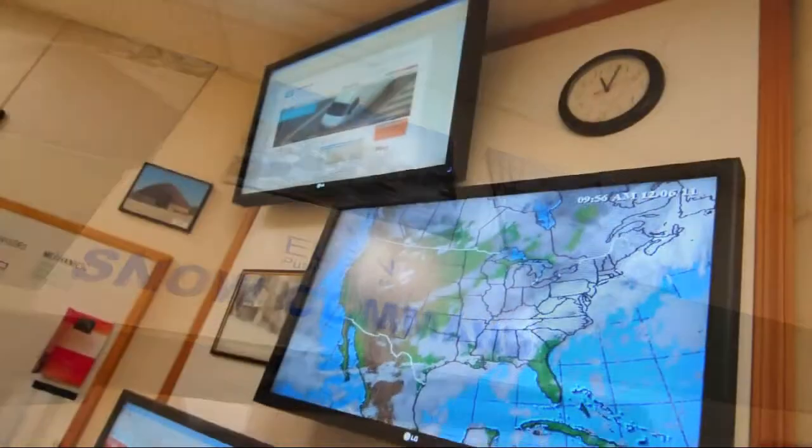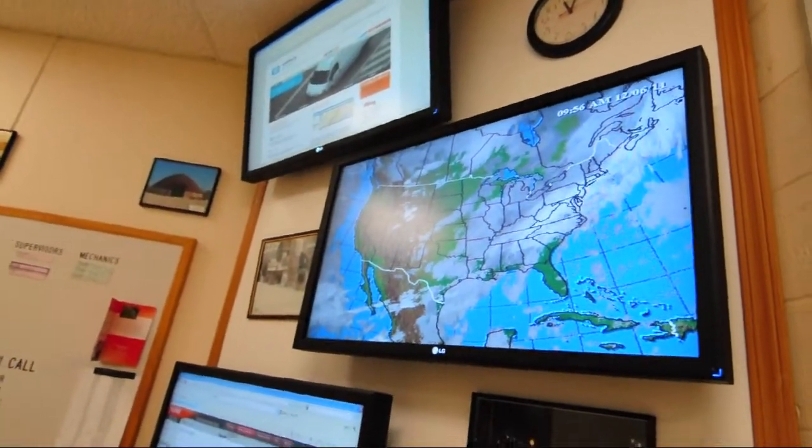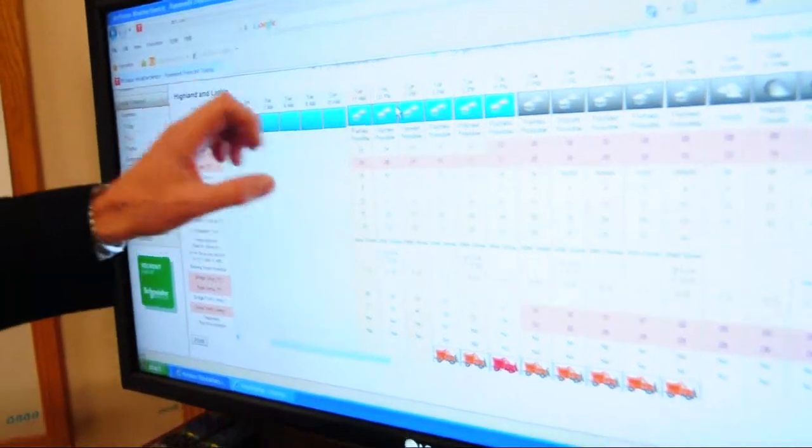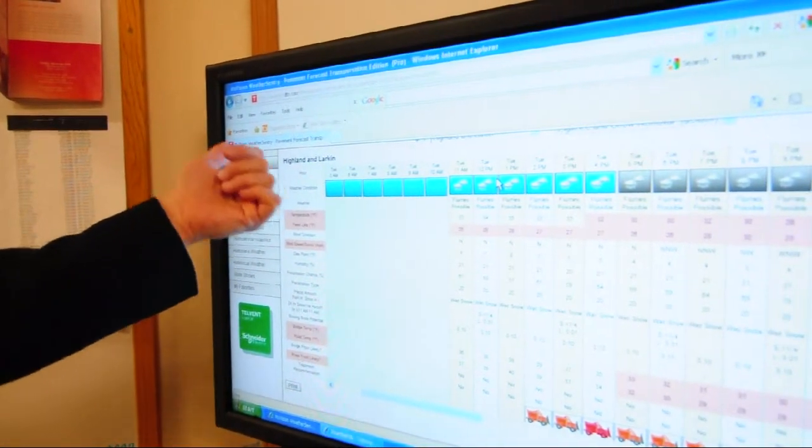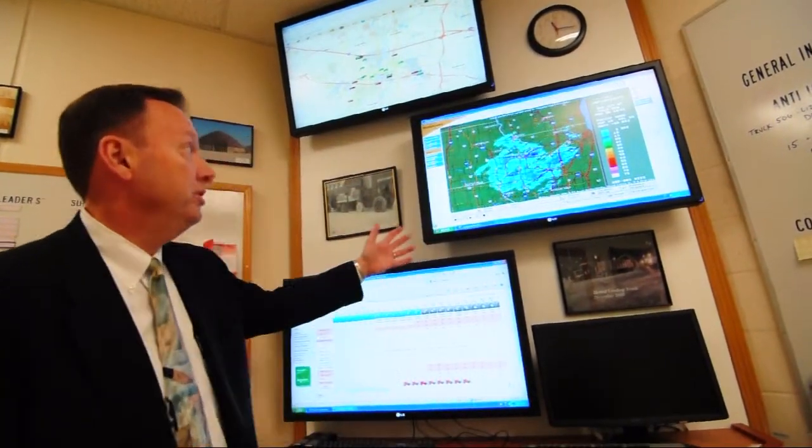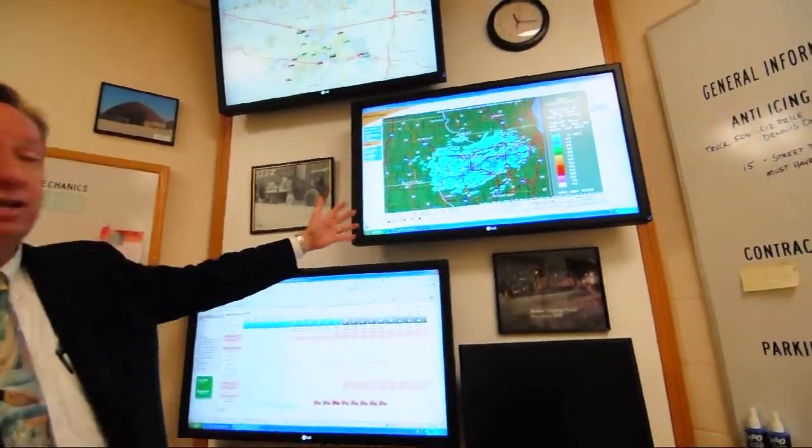We're in the Elgin Snow Command and this is our rain thruster, the operation of the unit. This is our weather system forecasting device. This is essentially a redundant version of that, but this one is satellite based.